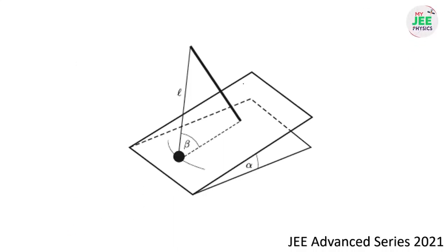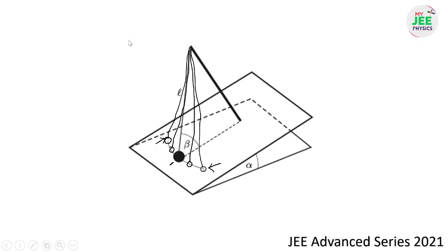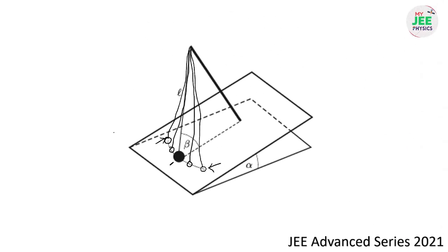Now, looking at the given arrangement, the oscillation of the pendulum works like this: the string moves between two extreme positions, with the mean position in between, and we need to find the time period of oscillation.